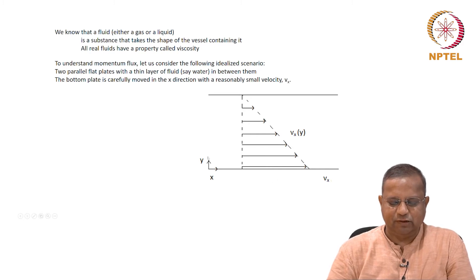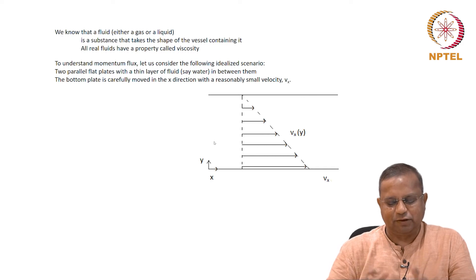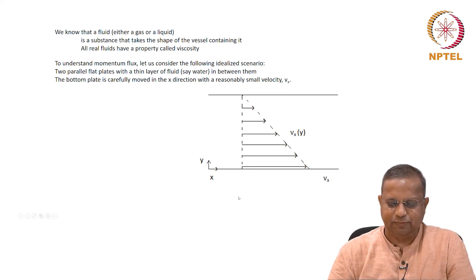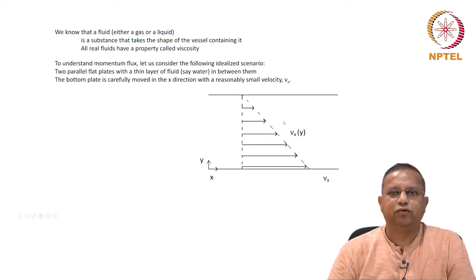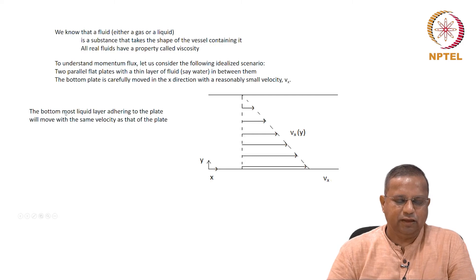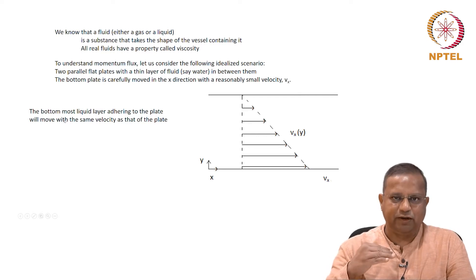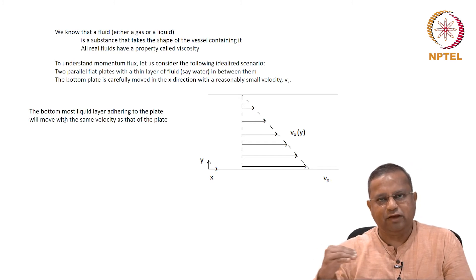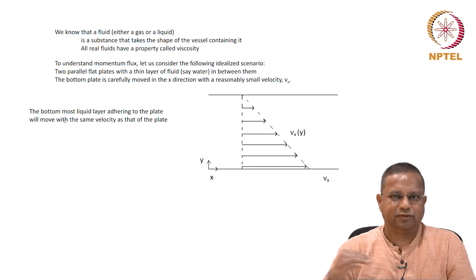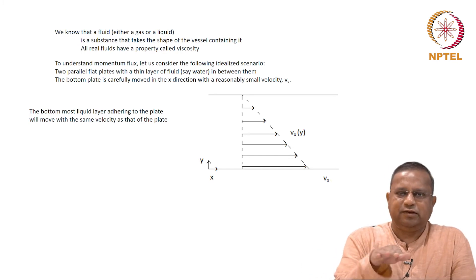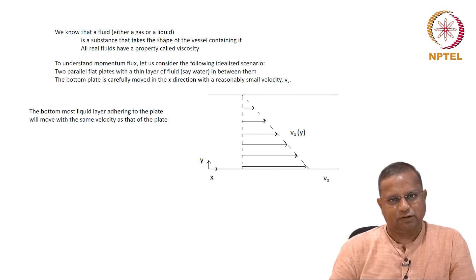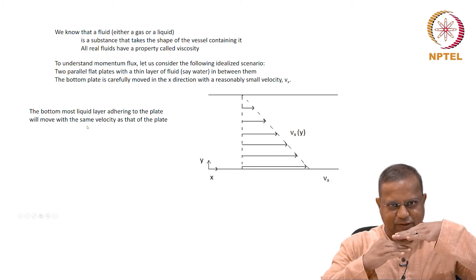This is the x direction, this is the y direction. We will stick to two dimensions to begin with, and then shift to three dimensions. The situation is that the top plate is stationary, the bottom plate is moved, and there is a thin layer of fluid in between. The bottom-most liquid layer adheres to the plate and therefore moves with the same velocity as the plate — a very good assumption we will keep using.